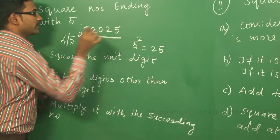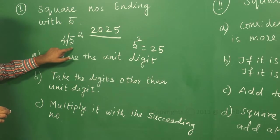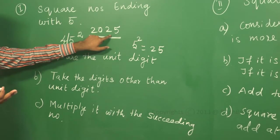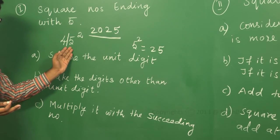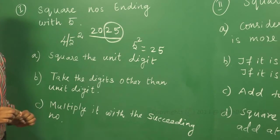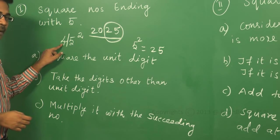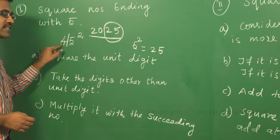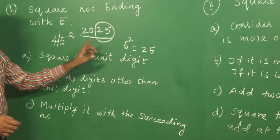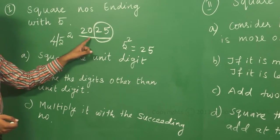Let me explain the steps again. First step: square the unit digit — unit digit is 5, so we get 25. Always, if you square a number ending with 5, the unit digits will always be 25 — this is a fixed term. The only thing you have to do additionally is multiply by the succeeding term: the succeeding term of 4 is 5, so 4 into 5 gives 20. So 20, 25 — meaning 45 squared equals 2025.